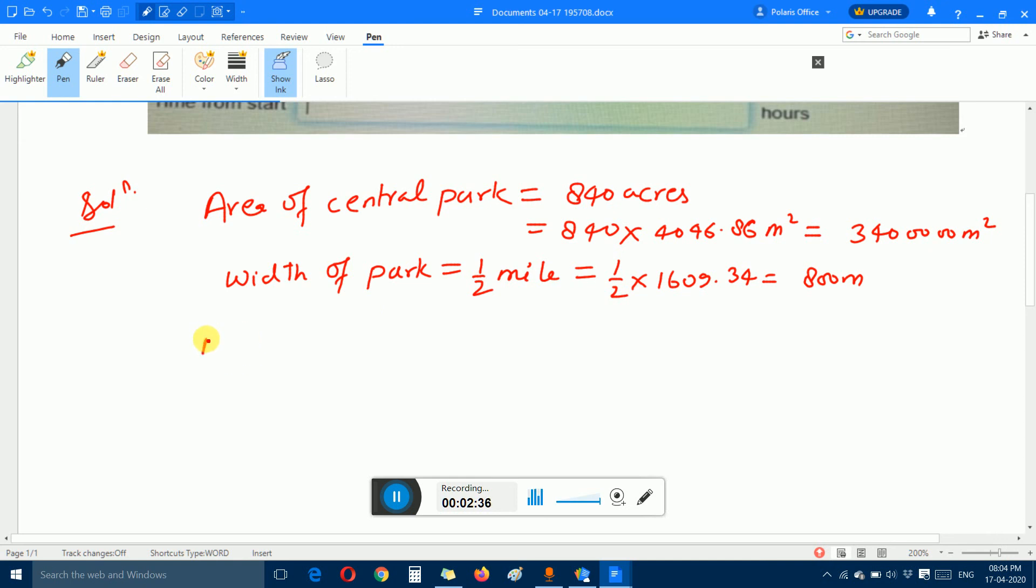Since we know the area of a rectangle is equal to length times breadth, then length equals area divided by breadth. The length is 3,400,000 divided by 800 meters, which equals 4,250 meters.